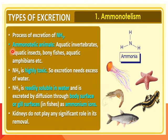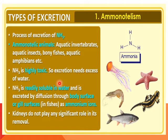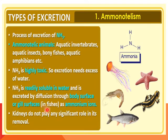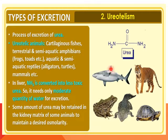Animals which eliminate ammonia as the waste product are known as ammonotelic animals. Examples include aquatic invertebrates, aquatic insects, bony fishes, and aquatic amphibians. Ammonia is highly toxic and needs excess water; it is readily soluble in water and is excreted by diffusion through the body surface or the gill surface in fish as ammonium ions.